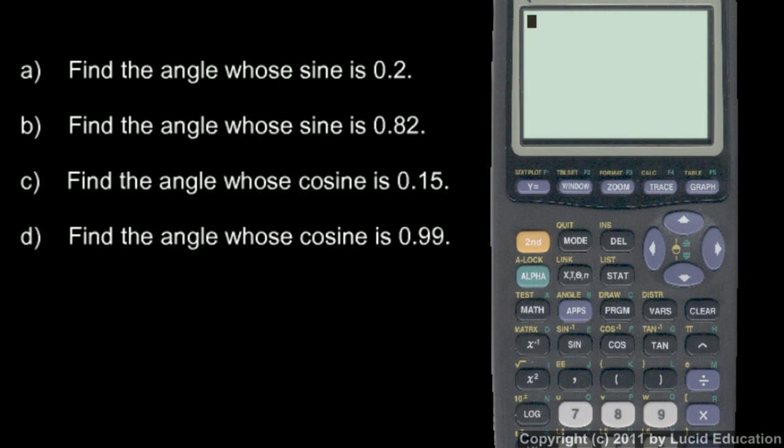Find the angle whose sine is 0.2, we just do the inverse sine of 0.2. And there it is, 11.5, round that to 11.54 degrees. Find the angle whose sine is 0.82, we do inverse sine of 0.82, and it comes out to 55.08.